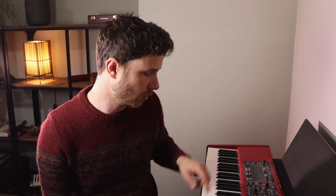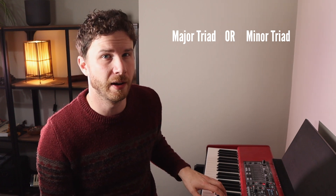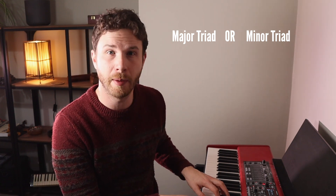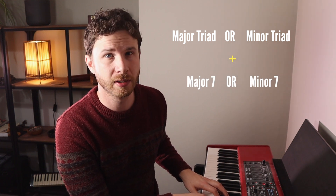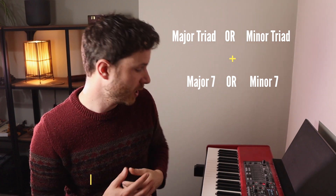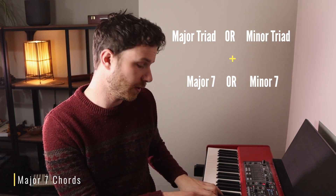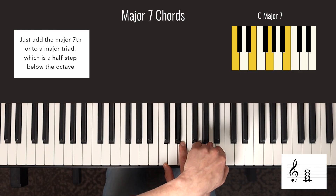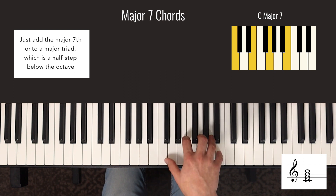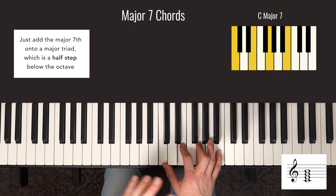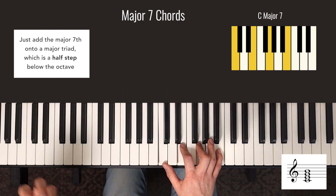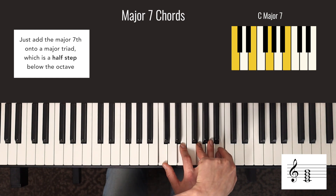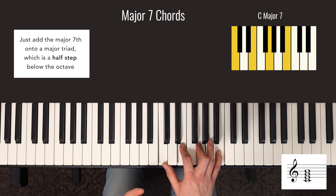If we have two possible chords — C major or C minor — and two possible sevenths — the major seventh or the minor seventh — that gives us four combinations. The first one is the major triad plus the major seventh. Here's the C major triad and we add on the B, the major seventh. The name for this combination is called a major seventh chord. Be careful, because people may be referring to the major seventh note — the interval from the root — or the name of the whole chord, which is also called a major seventh.